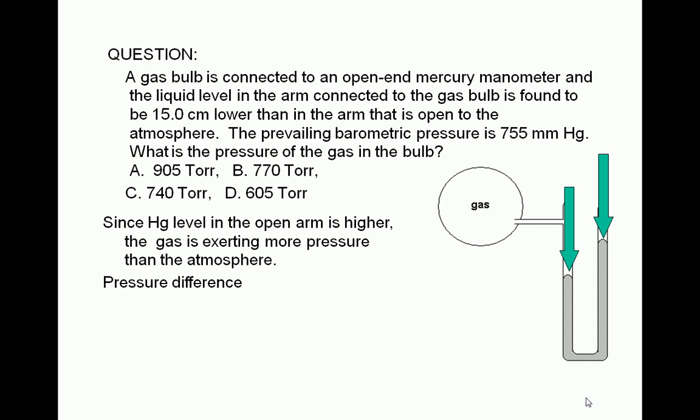The difference between the pressure of the gas and that of the atmosphere is equal to the difference in the height of the mercury levels, which is given in the problem as 15.0 centimeters or 150 millimeters of mercury. Therefore, the pressure of the gas is higher than the barometric pressure by 150 millimeters of mercury.